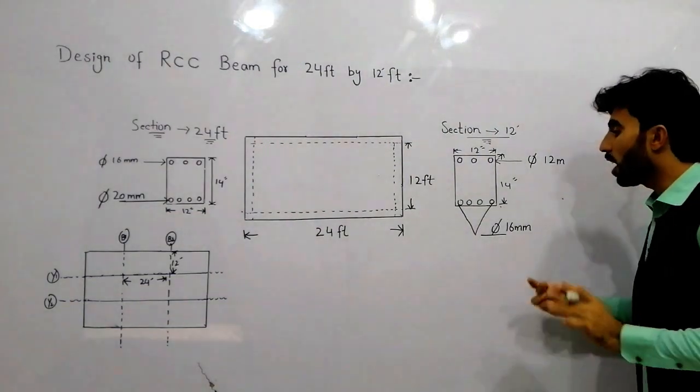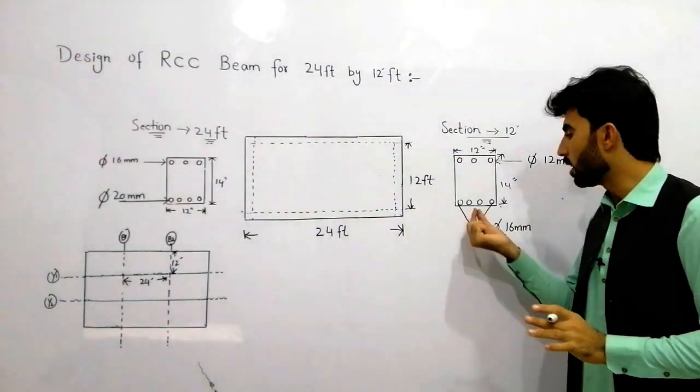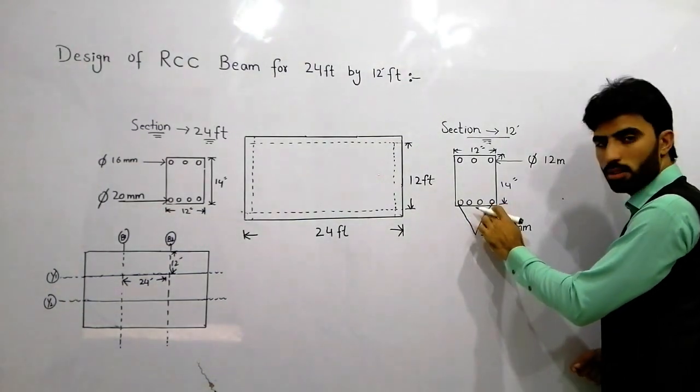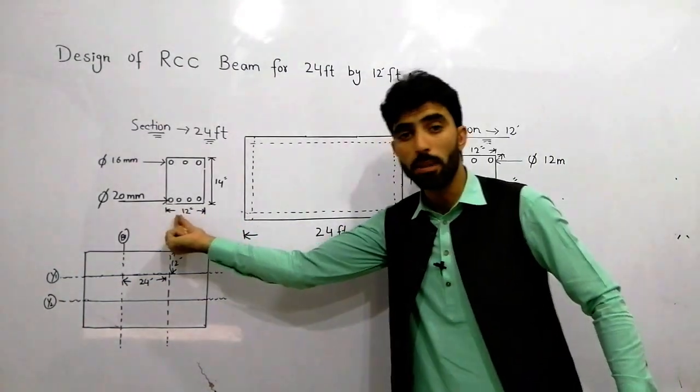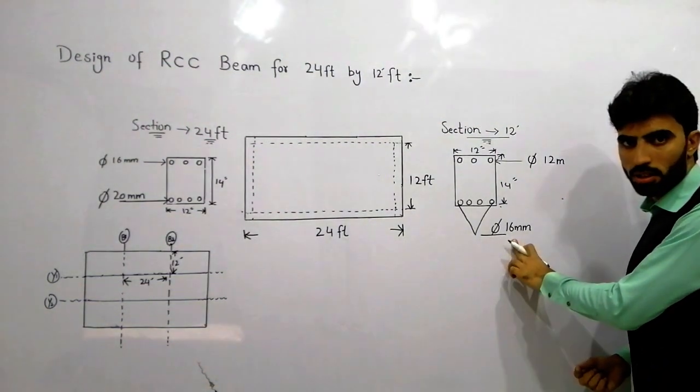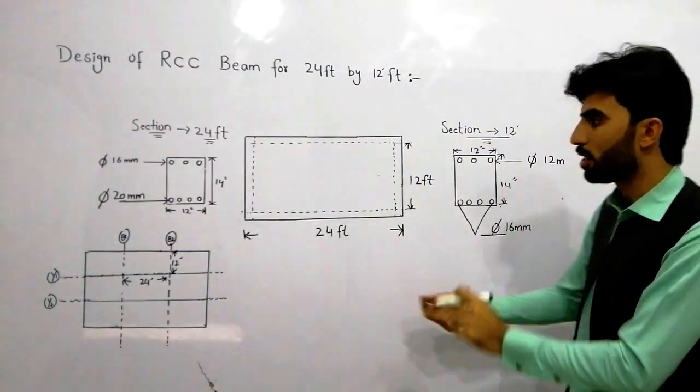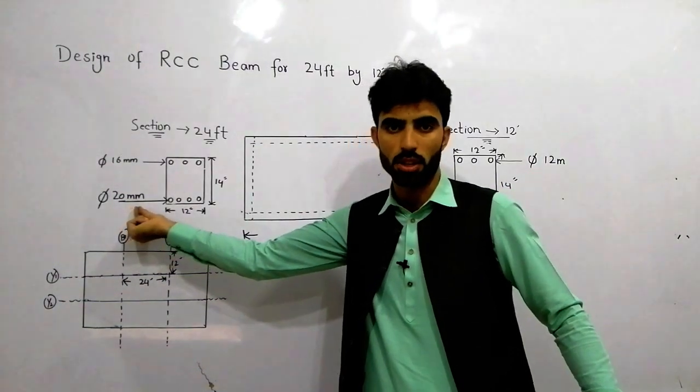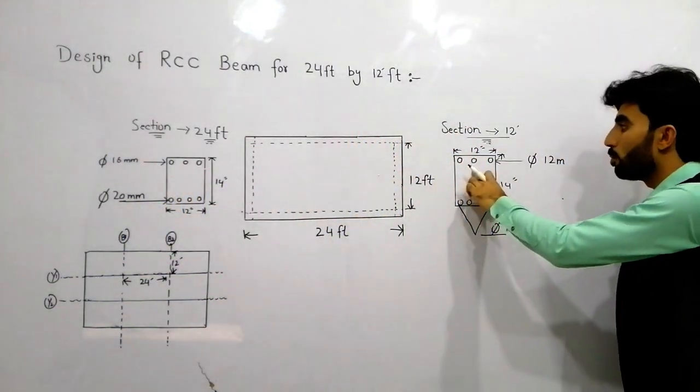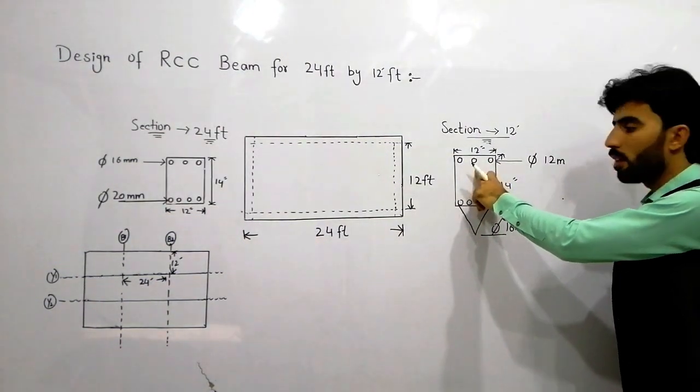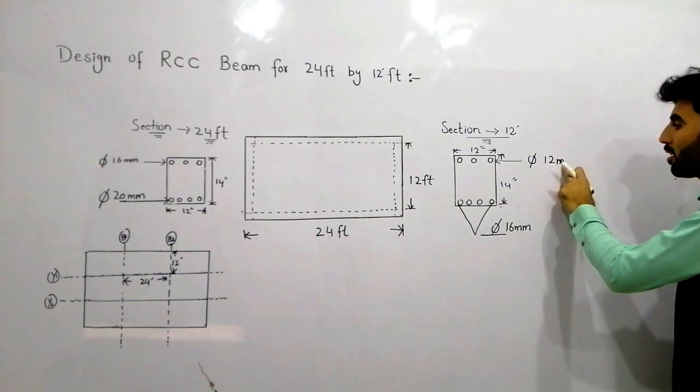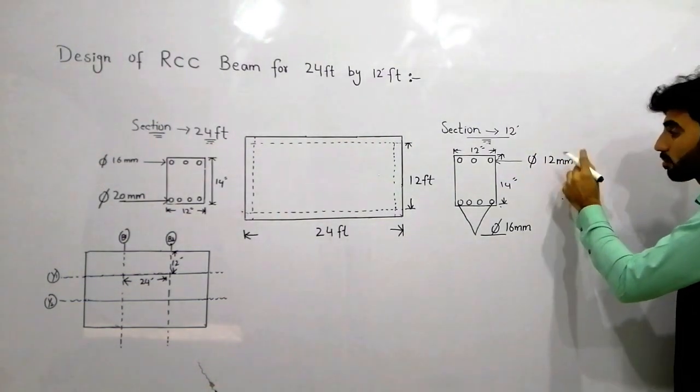But remember, the only change is in the steel. We use the same four steel bars like this, four steel bars but the diameter here is 16 millimeter. Four numbers with 16 millimeter, compared to 20 millimeter for the 24 feet. For 12 feet it's 16 millimeter. At the top of the beam we used three numbers of steel bars with 12 millimeter diameter.